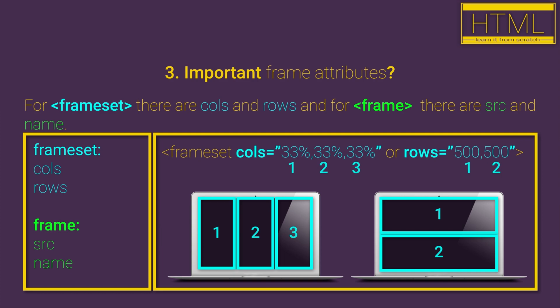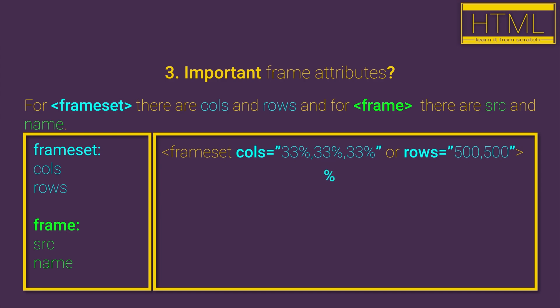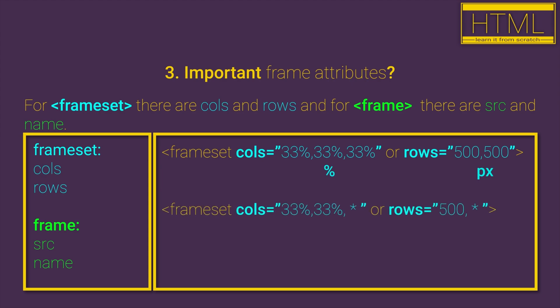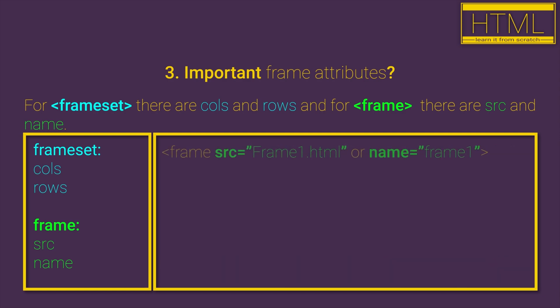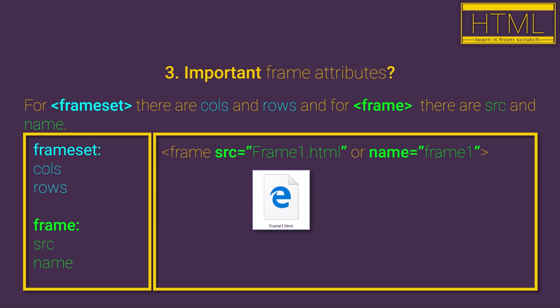That value can be set in percent or in pixels. If we don't know how much of our columns or rows will take from the height or width of our screen, we can easily use an asterisk that will take the whole remaining width or height of our screen. For the frame HTML element we need to use the src, or source, HTML attribute that will load the content of some HTML document as content for our frame.